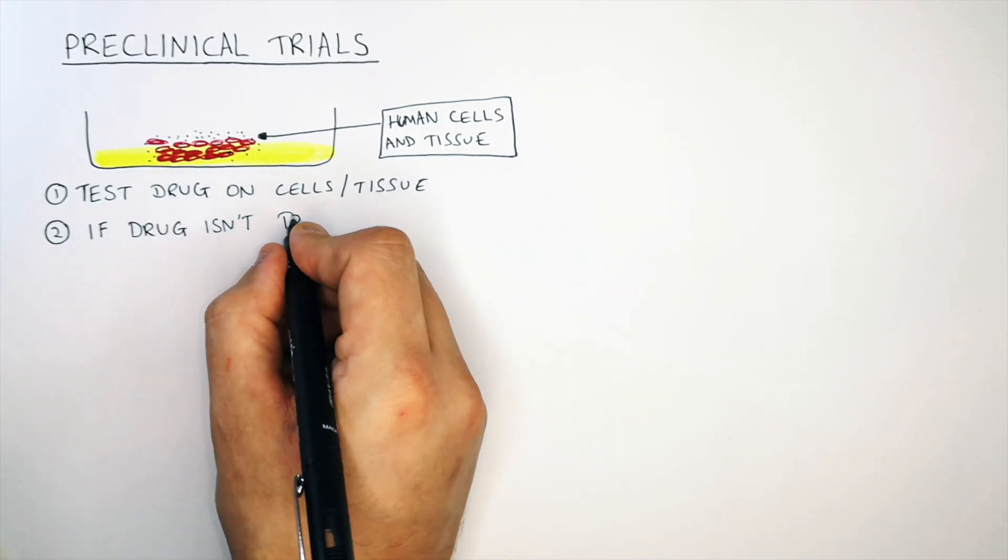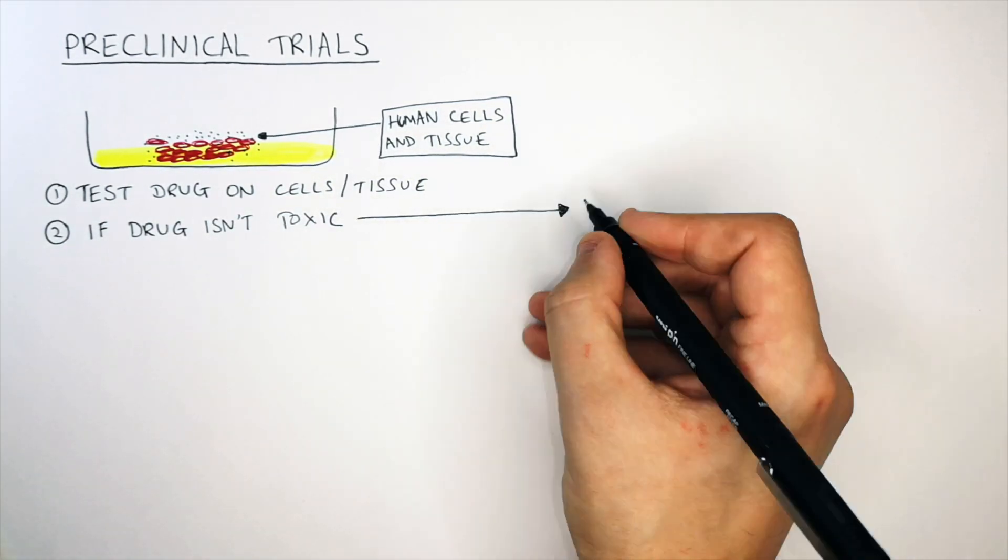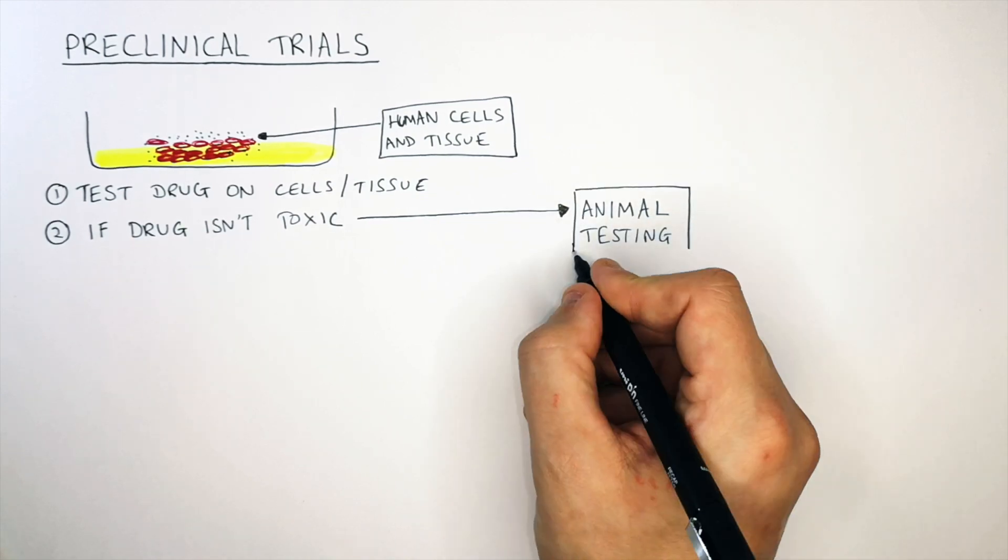So if the drug isn't toxic you will then test the drug on live animals and you go into animal testing phase.